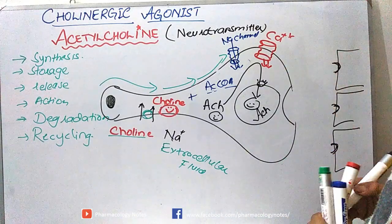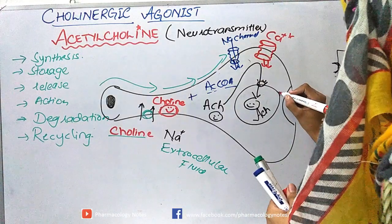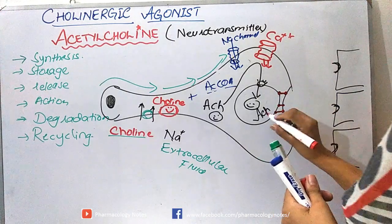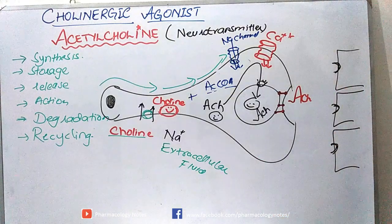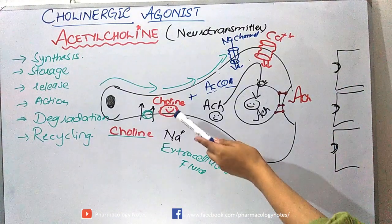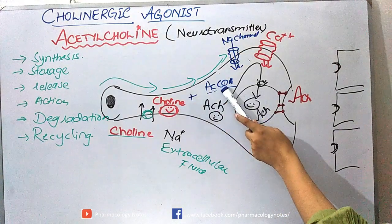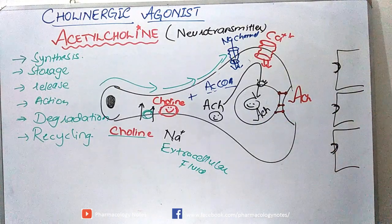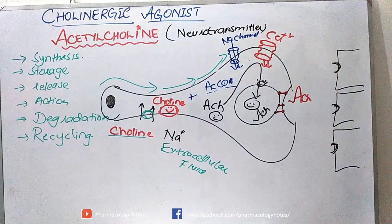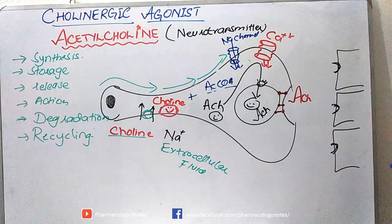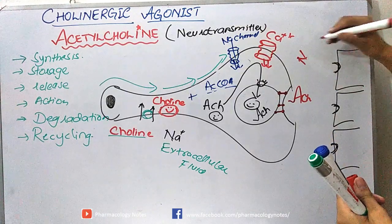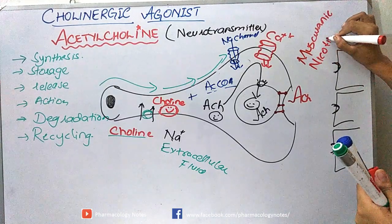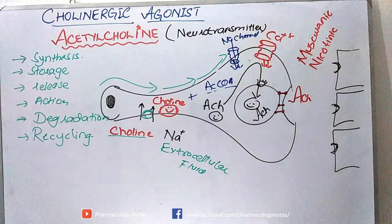As calcium arrives, it binds at binding sites and causes the vesicle to fuse, leading to the release of acetylcholine. This acetylcholine, synthesized from choline combined with acetyl CoA and stored in vesicles, is now released into the synaptic cleft, where it is ready to bind to two types of receptors: muscarinic receptors or nicotinic receptors.